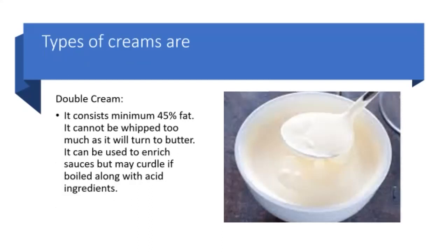Double cream should contain at least 45% of butter fat. Double cream cannot be whipped too much as over whipping will turn it to butter. However, it can be used to enrich sauces. However, it might curdle if boiled along with acidic ingredients.